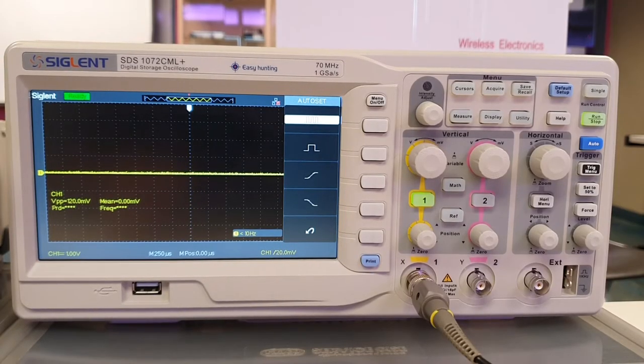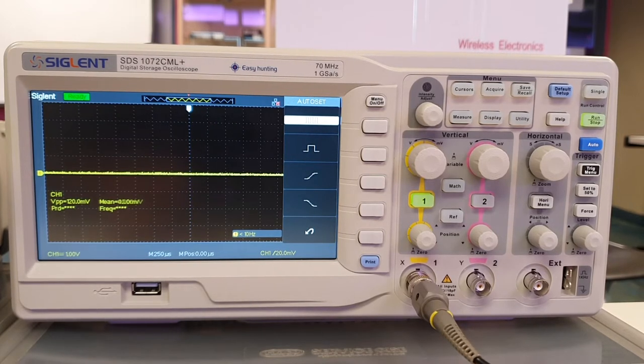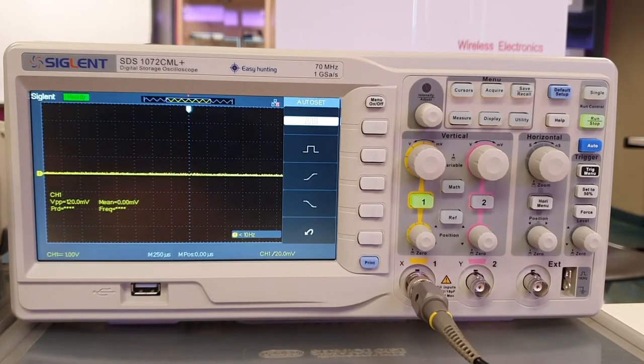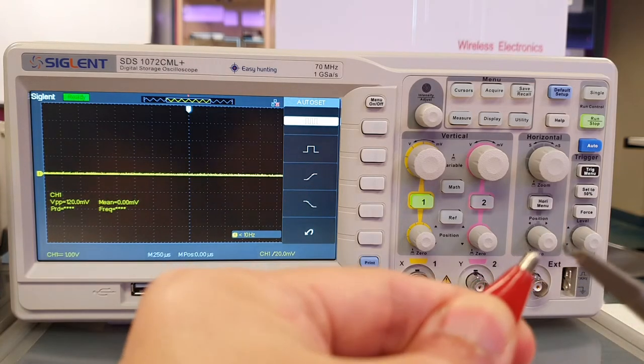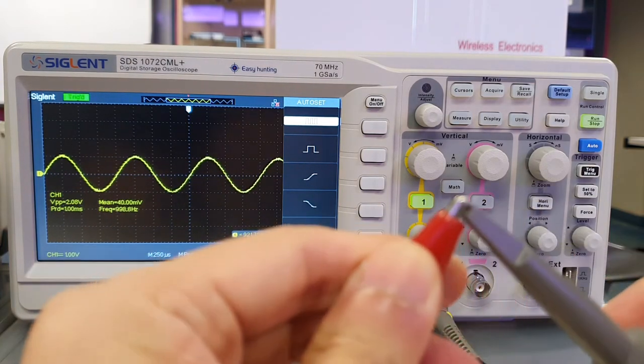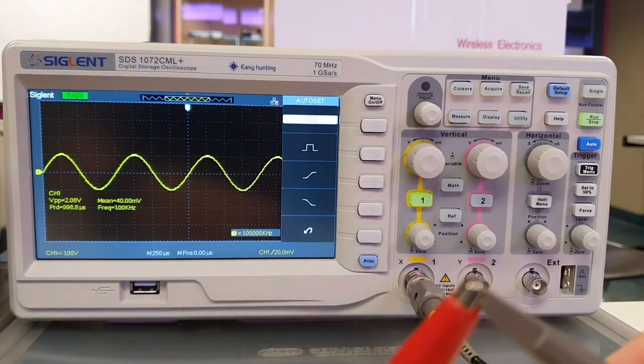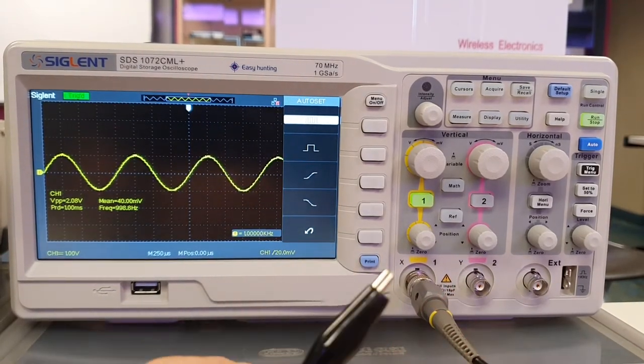Next, monitor the output of the function generator with a digital oscilloscope. Connect the red clip of the BNC cable to the hook of the scope probe, then connect the black clip of the BNC cable to the clip of the scope probe.